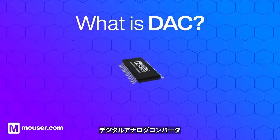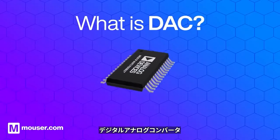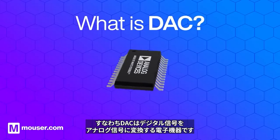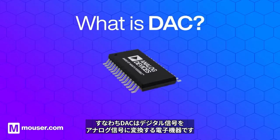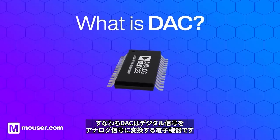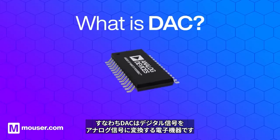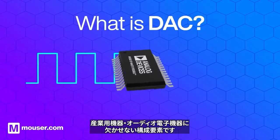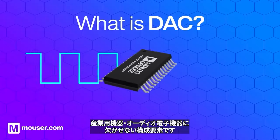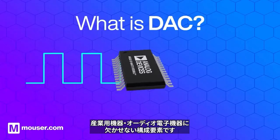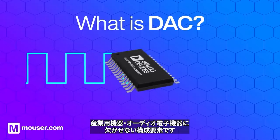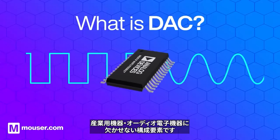A digital to analog converter, or DAC, is an electronic device that converts digital signals into analog signals. It's an essential component of both industrial and audio electronics equipment.